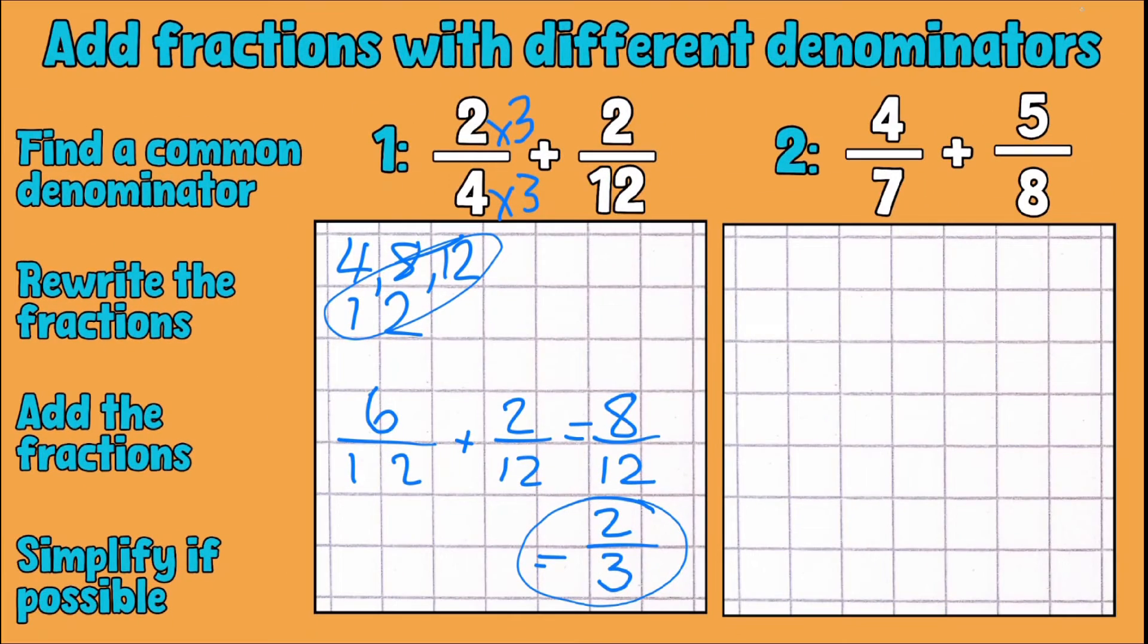Okay so for our second example we have four sevenths add five eighths and you'll notice with this one I don't have denominators that I can easily make one into the other because you can't make a seven an eight and you can't make an eight a seven. So what I'm going to do is multiply these two together to find that common denominator. So seven times eight is 56 so that will give you some new denominators. So I'm going to write those down.